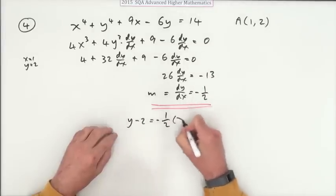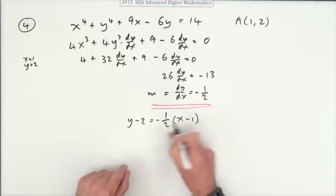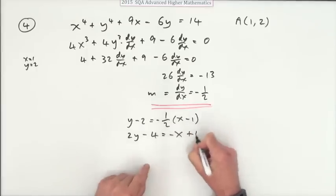Take that over because otherwise are fractions: 2y minus 4 is negative x plus 1.